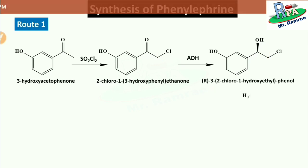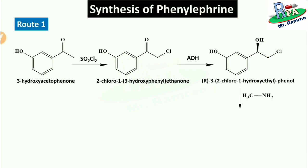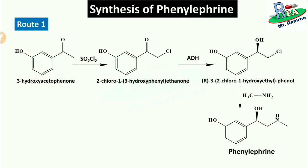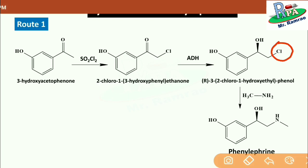Then the R form of 3-(2-chloro-1-hydroxyethyl)phenol undergoes reaction with methylamine. Because in the structure of phenylephrine, a methylamino group is present at the second position of the side chain, so the reagent methylamine is used. This forms the desired product phenylephrine. In the last step, the chlorine group and one hydrogen from the amine are removed as HCl, forming phenylephrine.